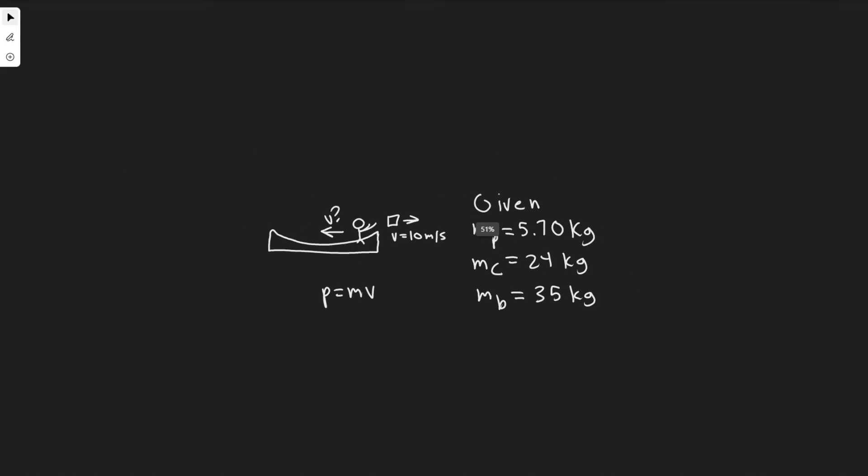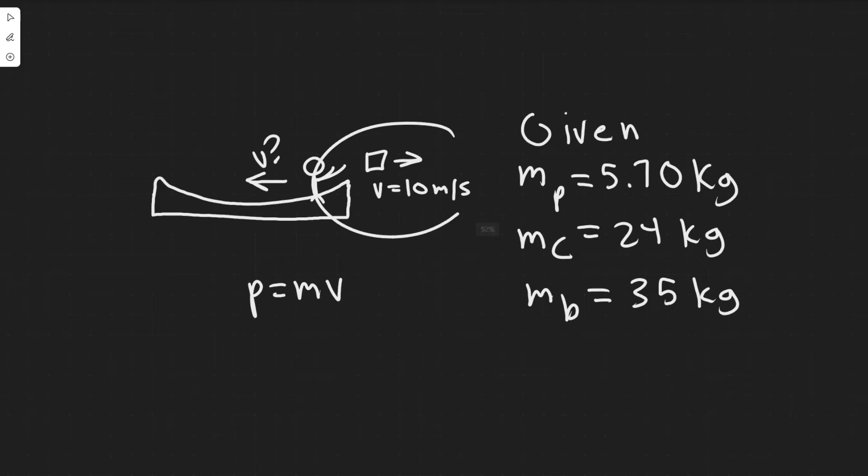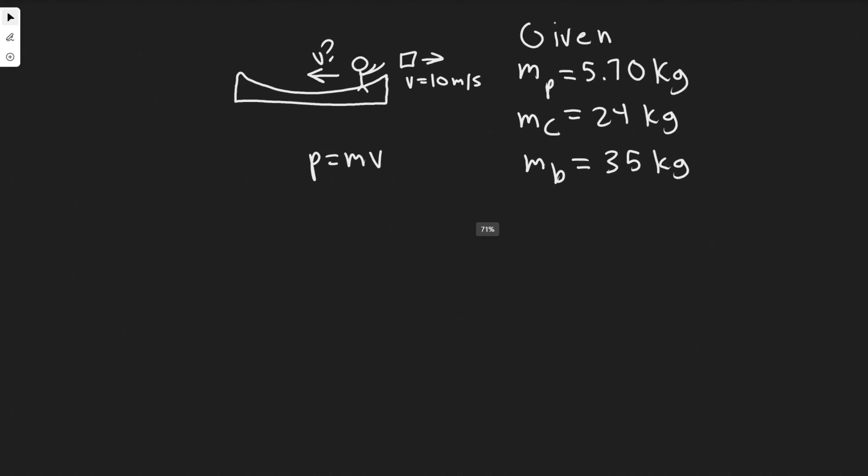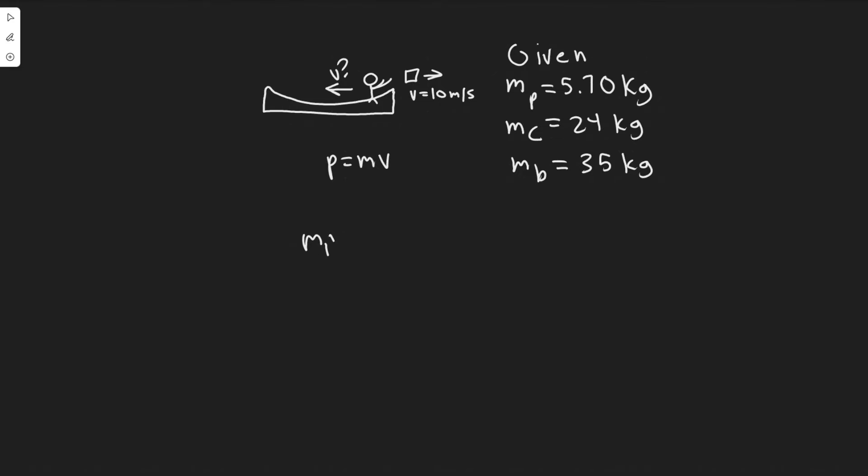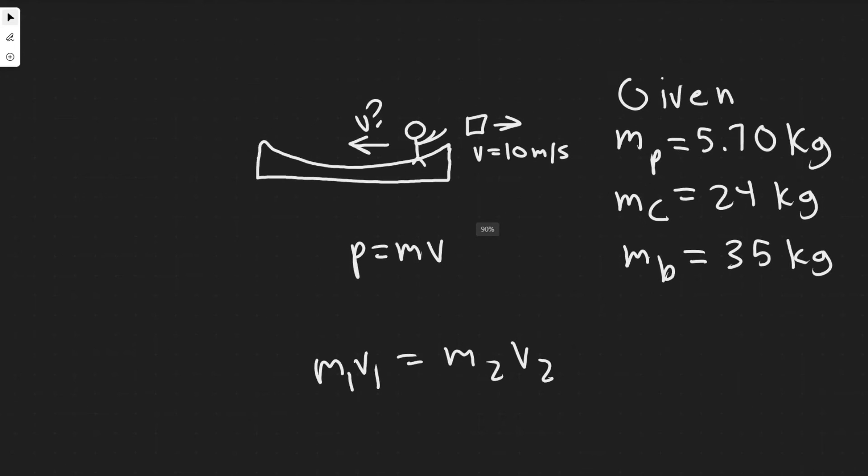We know the momentum is going to be from throwing the package. So I'm just going to write m1v1 equals m2v2. The way you want to think about this is as one system. We want to think of the mass and the velocity of the system before and then the mass and velocity of the system after.